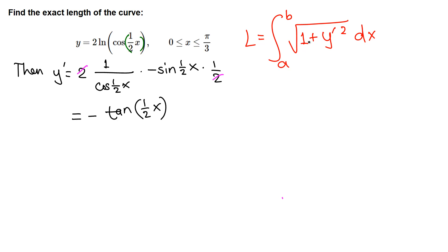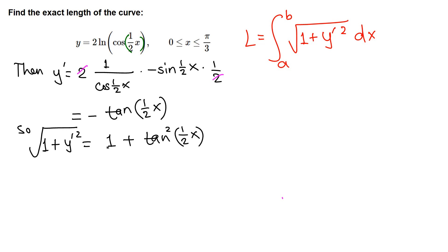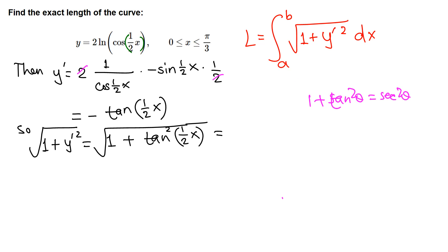Now we need to compute 1 + (y')². That's 1 + (-tan(x/2))². The negative squared is positive, so we get 1 + tan²(x/2), and we take the square root. We know from the Pythagorean identity that 1 + tan² = sec², so this becomes the square root of sec²(x/2).